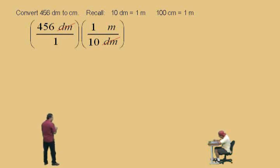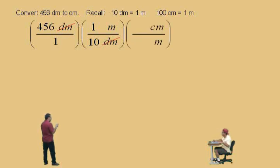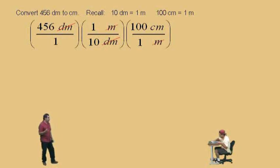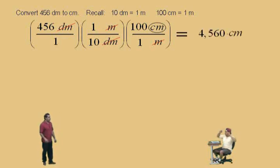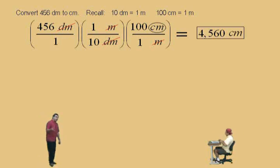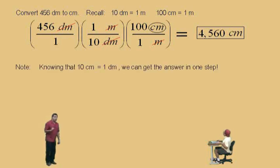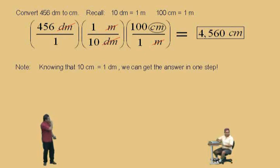Now, what are we going to do? Convert the meters to centimeters by putting meters on the bottom and centimeters on top. Remember, a hundred centimeters is one meter. So we put a hundred centimeters on top, one meter on the bottom, meters cancel out, and our answer is in centimeters because those are the dimensions left. So what is our answer? Put the numbers in your calculator — 4,560 centimeters. Don't forget our units are centimeters. Don't forget to box your answer. This problem could be done more efficiently if you know that there are ten centimeters in one decimeter — you can get the answer in one step. There's only one answer; there are many different ways to get there.